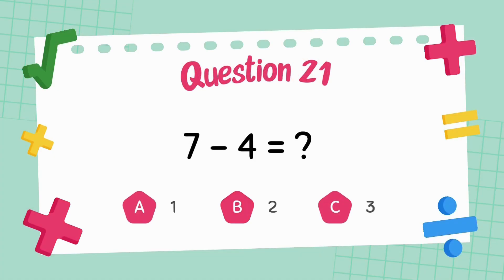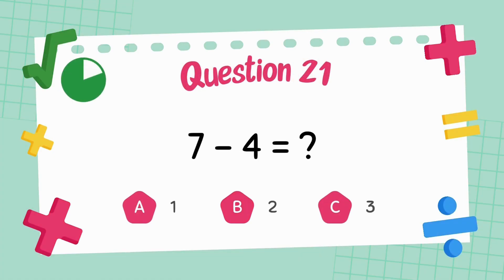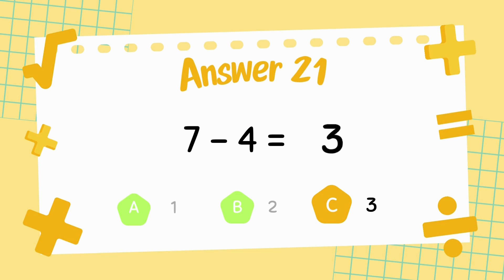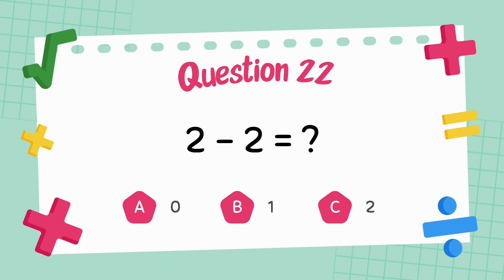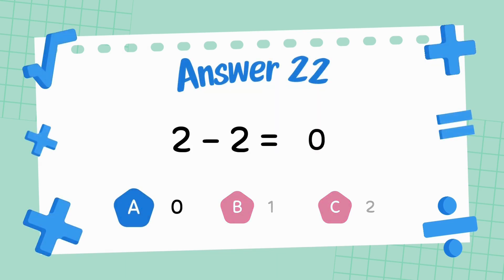What is 7 minus 4? The answer is 3. What is 2 minus 2? The answer is zero.